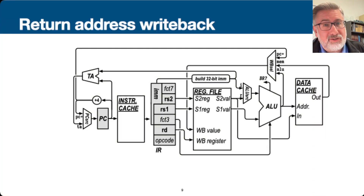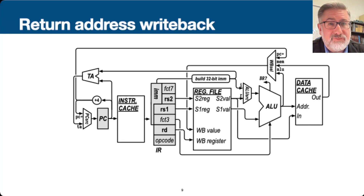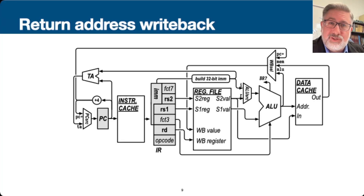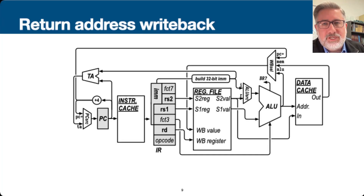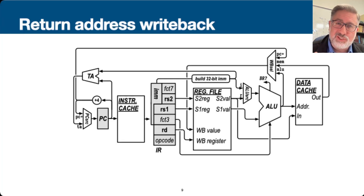So this is where we left off when we built the single-cycle RISC-V CPU — the actual data path. The ALU is part of it. We need instruction cache, data cache, the register file, and then all of these connections allow us to make all of these different choices.